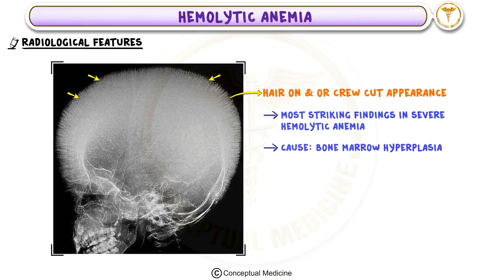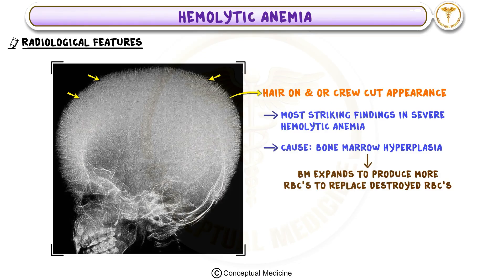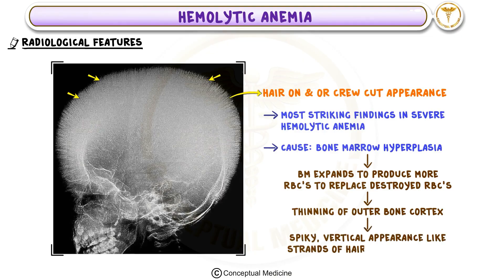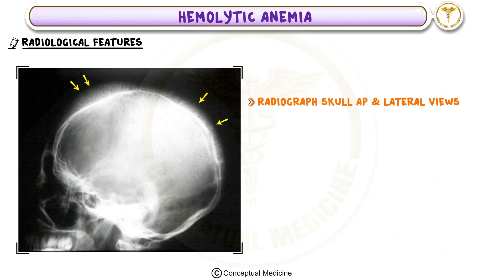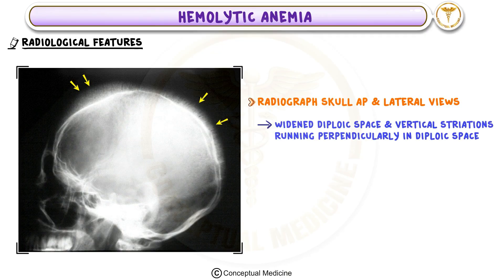Bone marrow hyperplasia: The bone marrow expands in an attempt to produce more RBCs to replace the ones being destroyed. This expansion leads to thinning of the outer bone cortex, giving it a spiky, vertical appearance like strands of hair standing on end. Radiographed skull AP and lateral views show wide diploic space and vertical striations running perpendicularly in the diploic space, giving rise to the characteristic hair-on-end appearance.